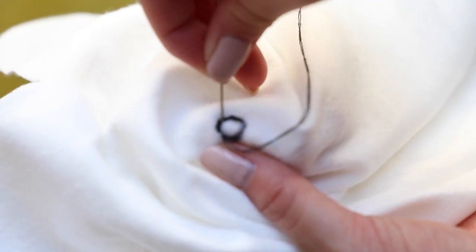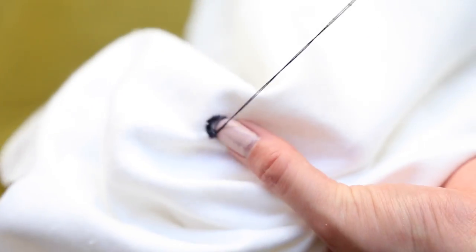Take some black thread and a needle and sew on the eyes like so until the entire pupil is covered in black thread.